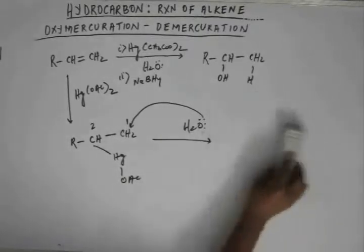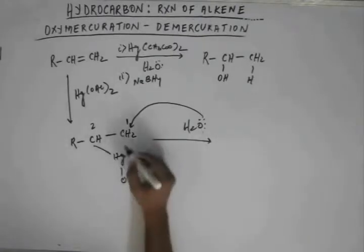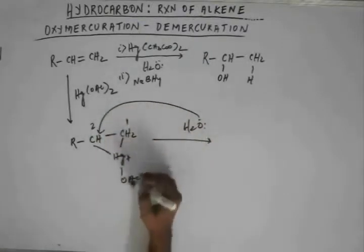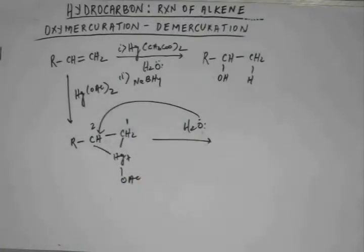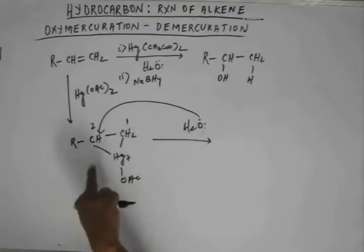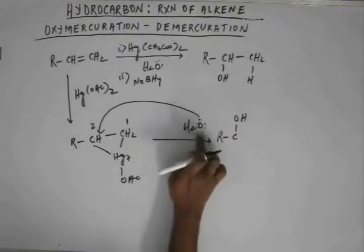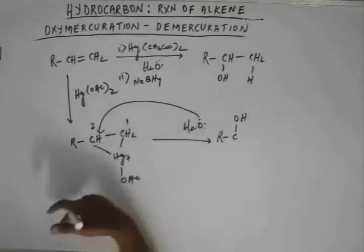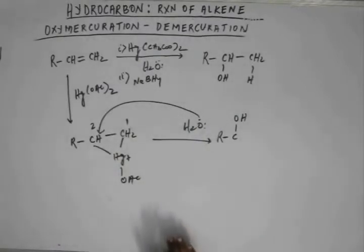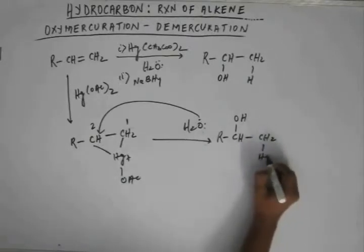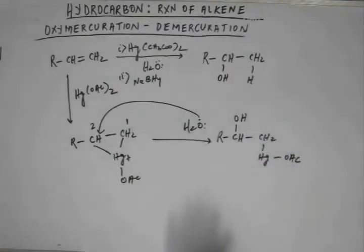What we would try to do is bring this mercury acetate group onto this carbon so that R and this big group do not come on the same carbon. This is the idea behind this reaction. So oxygen will not attack on C1. Oxygen will attack on C2 so that this mercuric acetate goes on C1, because of stability coming from lesser steric hindrance. This OH will come on C2, and the charge on oxygen will be removed by loss of H+.